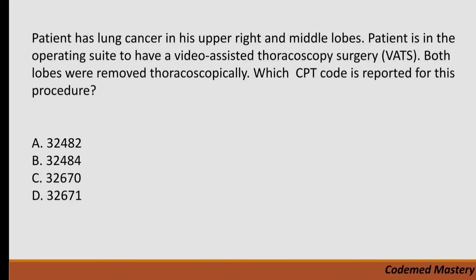Now let's solve a question related to VATS — video assisted thoracoscopy surgery. A patient has lung cancer in the upper right and middle lobes. The patient is in the operating suite to have video assisted thoracoscopy surgery, and both lobes were removed thoracoscopically. Which CPT code is reported for this procedure?